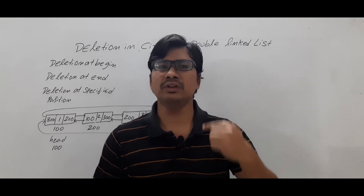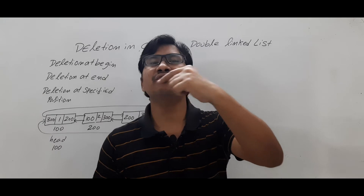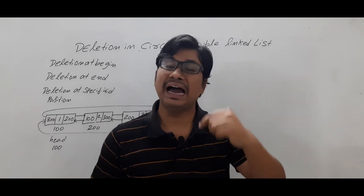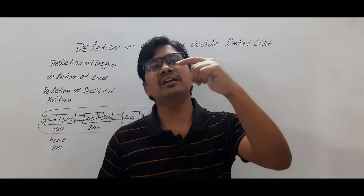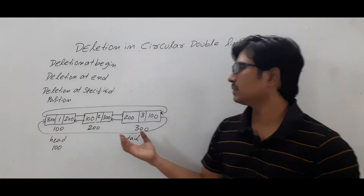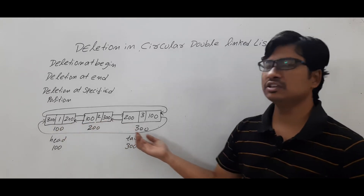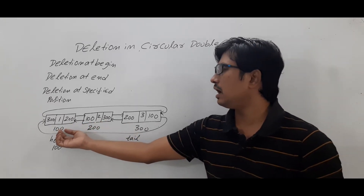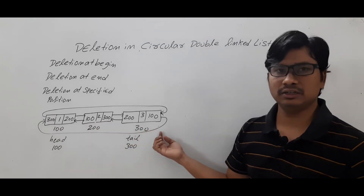First let me give an overview about the circular double linked list. It is a collection of nodes where each node will have the address of the previous node, data, and address of the next node. Here we have a circular double linked list with three nodes located at 100, 200, and 300 byte address locations.